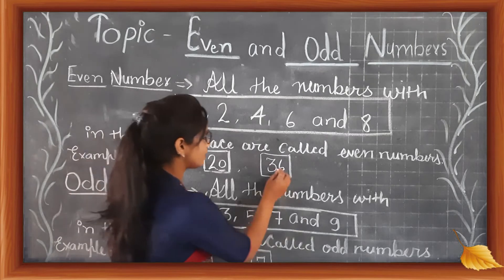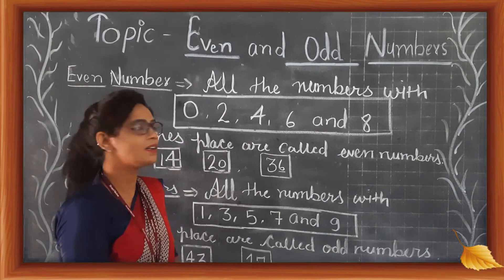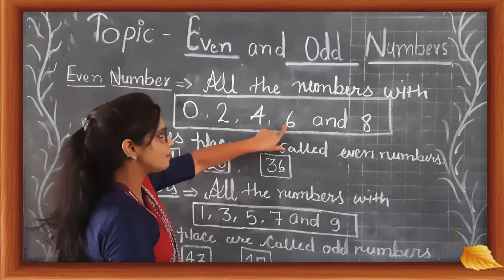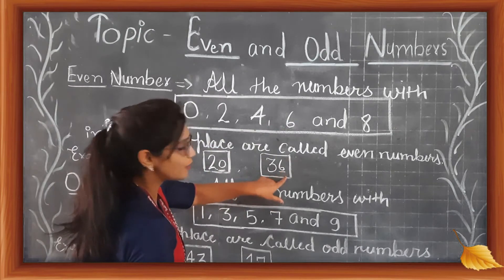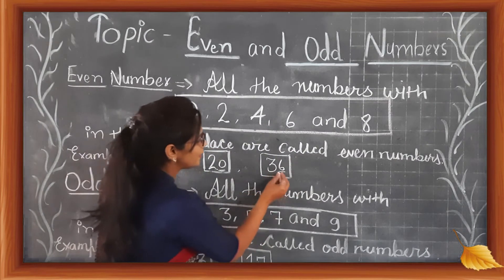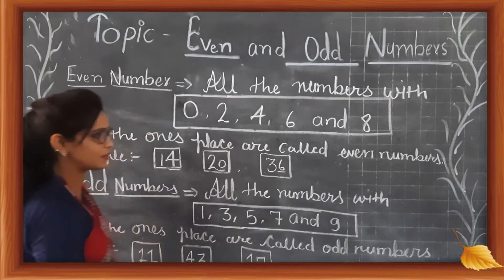6 is in the ones place. So 36 is an even number. The number has 6 in the ones place, so 36 is an even number. Okay students.